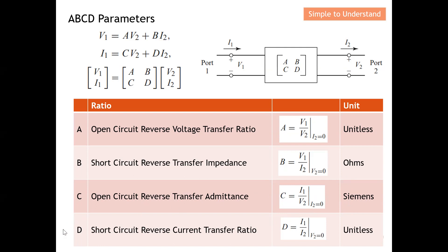D is known as the short-circuit reverse current transfer ratio. To obtain D, I need to make V2 equal to zero by having a short circuit at the output. Once V2 equals zero, I can find the value of D simply using I1 over I2. It is current over current, so it is unitless. D is the short-circuit reverse current transfer ratio.